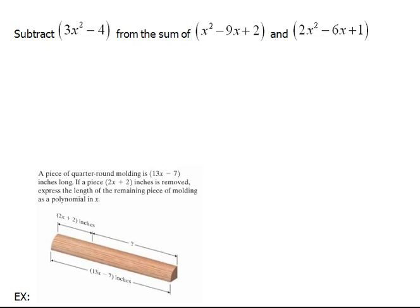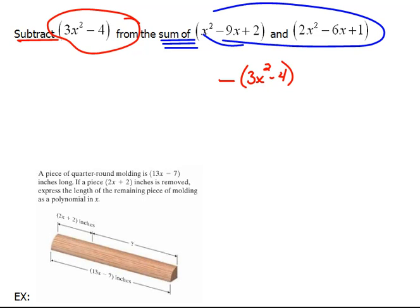The next one tells us to subtract this from a sum. Well when we subtract something from, that means we have to do minus 3x squared minus 4. And what are we taking it away from? We're taking it away from a sum, which means an addition of two things. We're adding these two trinomials together. So when we write it out, we're adding these two trinomials together, and then subtracting from that, this binomial.